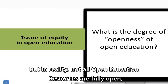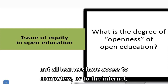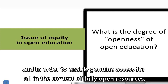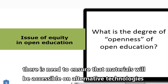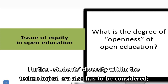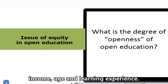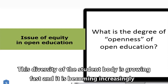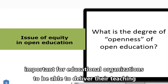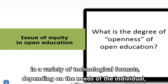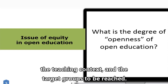But in reality, not all open education resources are fully open. Not all learners have access to computers or to the internet. And in order to enable genuine access for all in the context of fully open resources, there is need to ensure that materials will be accessible on alternative technologies, including mobile technologies. Students' diversity within the technological era also has to be considered. Learners vary considerably in terms of educational background, income, age, and learning experience. This diversity of the student body is growing fast, and it is becoming increasingly important for educational organizations to deliver their teaching in a variety of technological formats, depending on the needs of the individual, the teaching context, and the target groups to be reached.